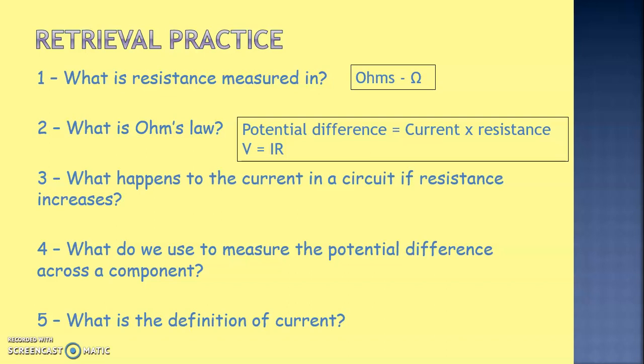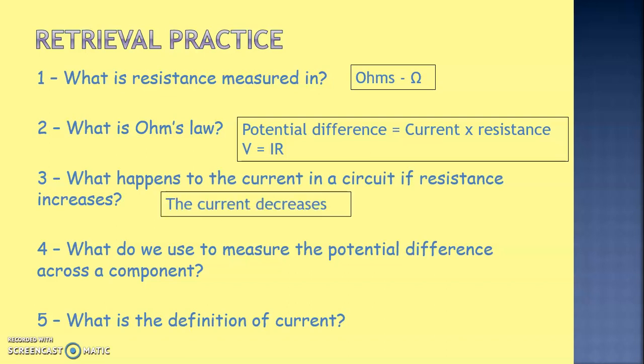Question three: what happens to the current in a circuit if resistance increases? Well, resistance restricts the flow of electricity. So if resistance increases, the current decreases.